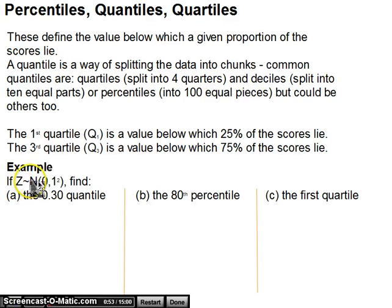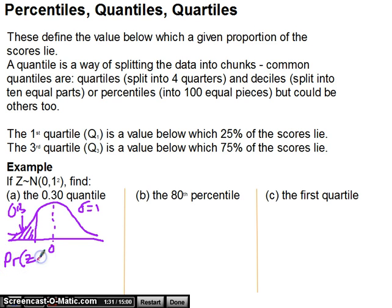First example: if Z is modeled by a normal distribution of mean 0 and standard deviation 1, which is our standard normal, find the 0.30 quantile. So, what this is asking us to do is find the point at which the data has been split such that we get 0.3 here, or 30% of the data. So, this is Z, so we have a mean of 0, standard deviation 1, and we're going to try to find the probability. Actually, we know that the probability that Z is less than Z1 is 0.3. So we're going to have to do an inverse distribution, or inverse normal function on our calculator to find out what that value is.